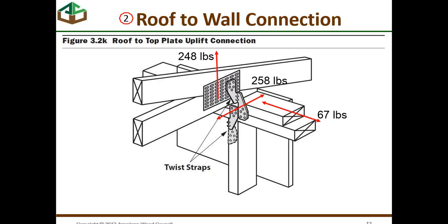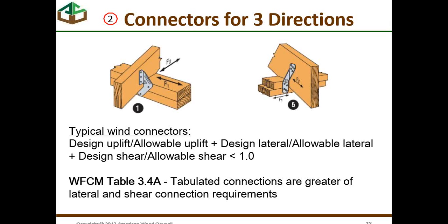This connector is required to resist loads in three dimensions. Without getting into proprietary issues, two examples from a connector catalog show resistance of loads F1 and F2, and the connectors will also handle uplift. The Wood Frame Construction Manual states that tabulated connections are the greater of lateral and shear connection requirements. For this particular manufacturer, when a connector handles multiple loads, they require a unity equation: the sum of the design load divided by the allowable load must be less than one.